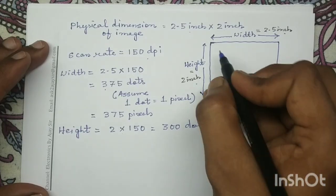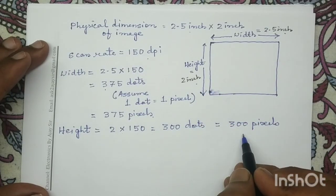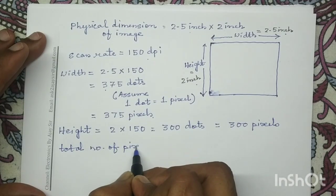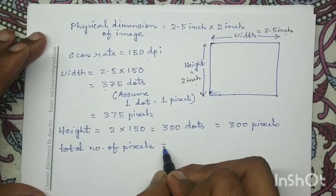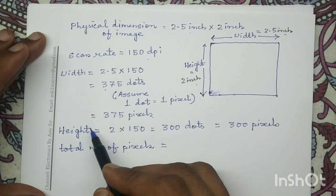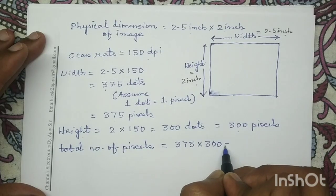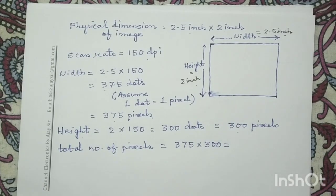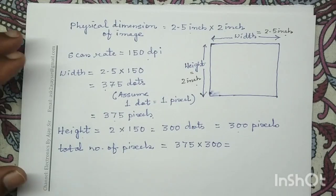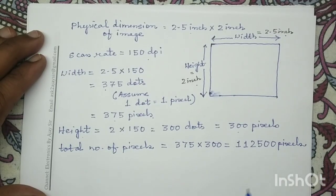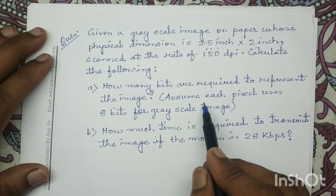Along the width we have 375 pixels and along the height we have 300 pixels. The total number of pixels in this digital input image equals width multiplied by height, that is 375 pixels multiplied by 300 pixels, which gives us 112,500 pixels. So the total number of pixels present in the digital input image is 112,500 pixels.